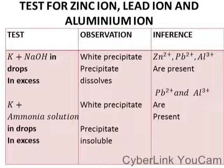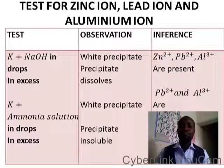Now for the test for zinc ion, lead ion, and aluminium ion together: K plus sodium hydroxide — white precipitate that dissolves in excess, indicating Zn²⁺, Pb²⁺, or Al³⁺ are present. K plus ammonia solution in drops and in excess — white precipitate that is insoluble confirms Pb²⁺ and Al³⁺ are present.